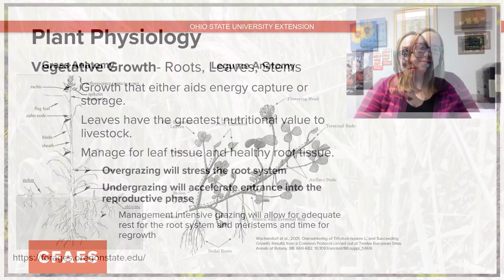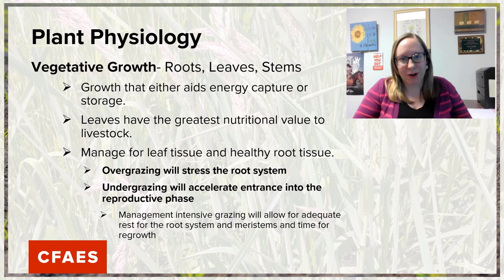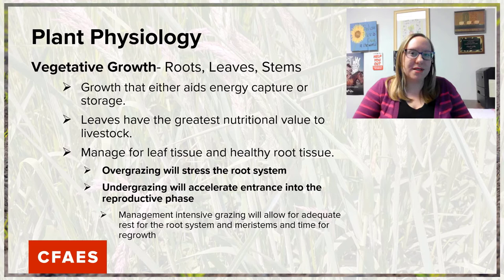Both grass and legume forages progress through a couple different stages of growth, which are important for us to understand in order to provide the best quality forage possible for our livestock. The first stage is the vegetative stage. During this growth stage, the plants put on roots, leaves, and stem tissue. This growth either aids in the capture of energy or in the storage of energy.